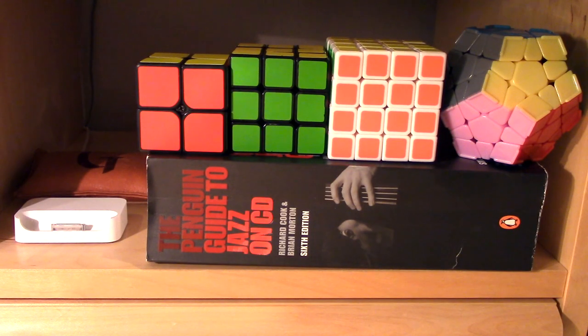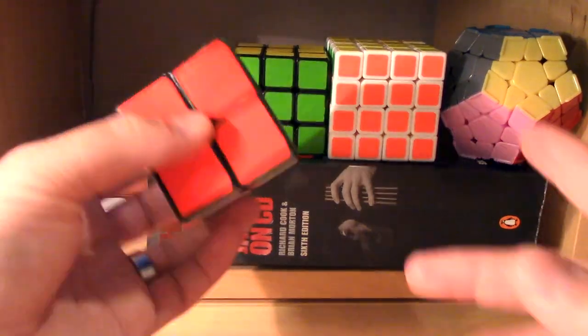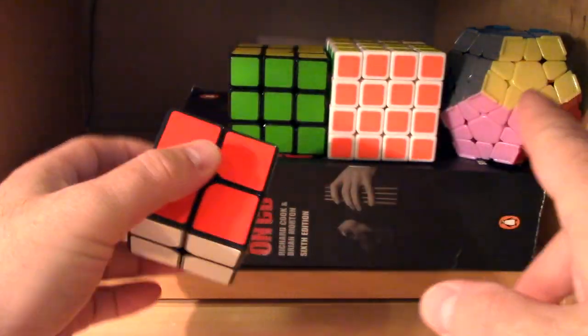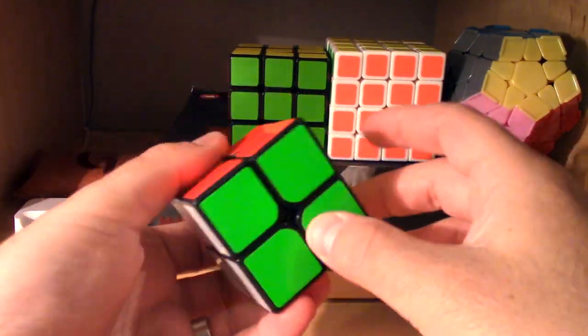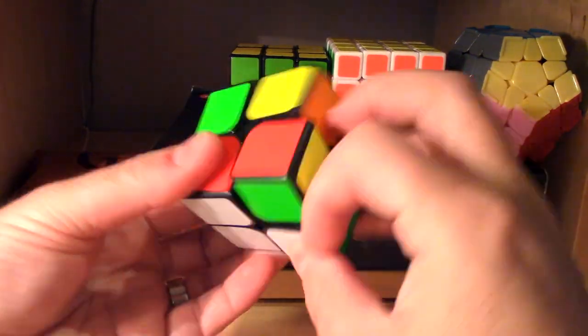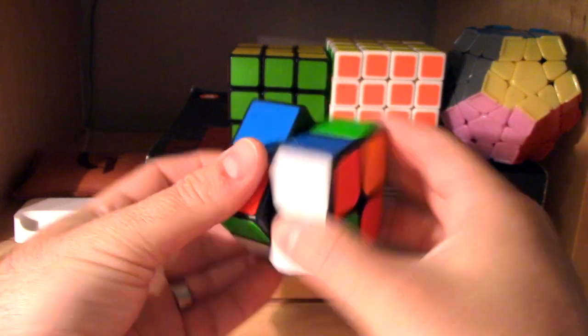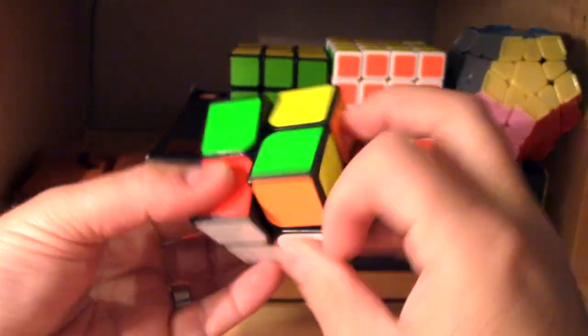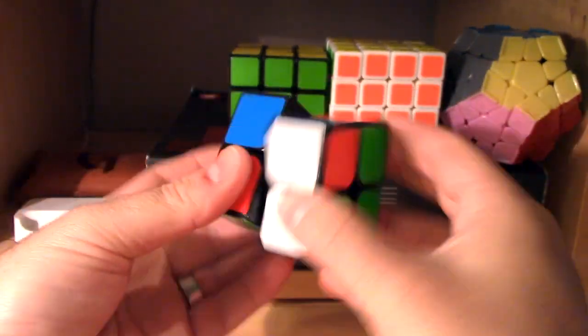And the next stop on the tour is at my desk at home where I have, just like downstairs, one of each of the cube formats that I tend to solve, although I don't solve Megaminx that much. This is a 2x2 Shang Shao. Very good cube, standard sticker scheme with brights.